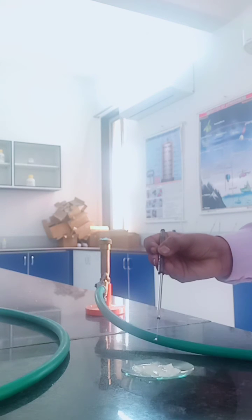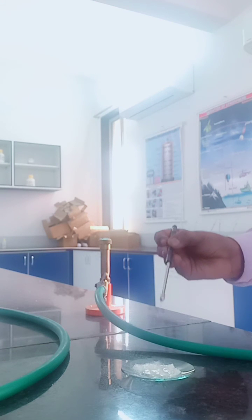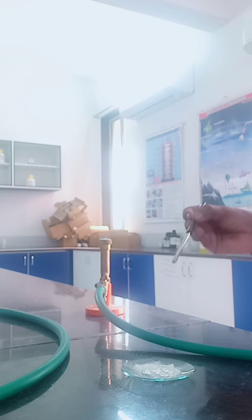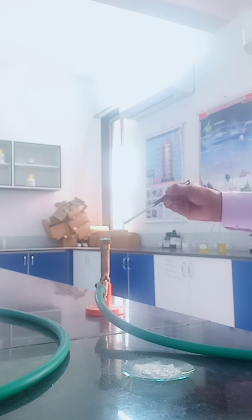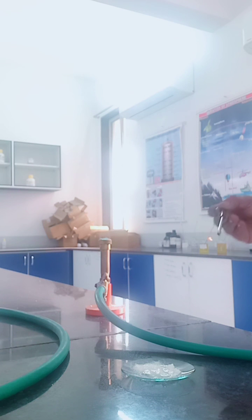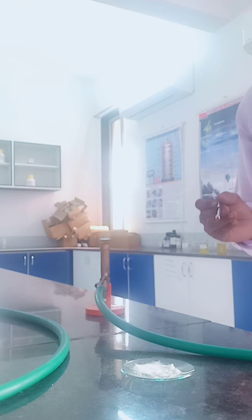And heating this on a blue flame, oxidizing flame, and see the color change of the flame. Look, this is a white, bluish white color. So this indicates the presence of lead ion in the compound.